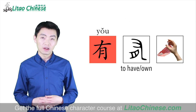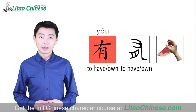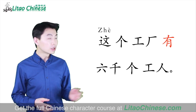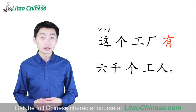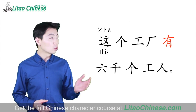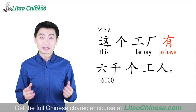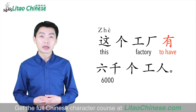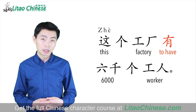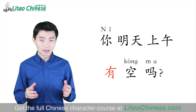The current version of the character 有 still means to have or to own. Let's look at two sentences with the character 有. The first sentence: 这个工厂有六千个工人, which means this factory has six thousand workers.